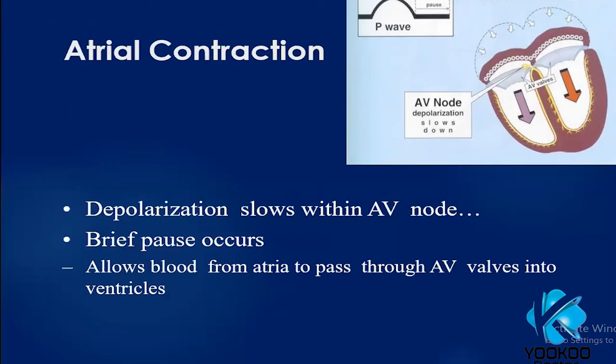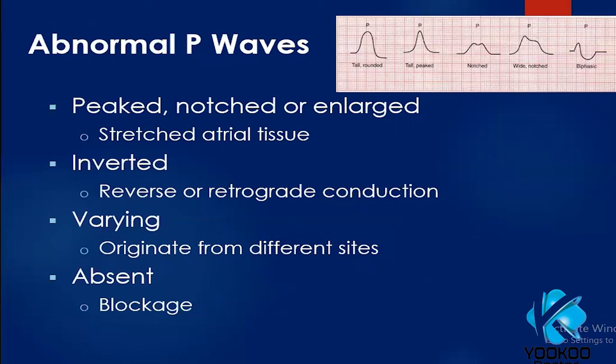Abnormal P waves can be peaked, notched, or enlarged, indicating stretched atrial tissue. They can be inverted, indicating reverse or retrograde conduction in cases where the SA node is not the actual pacemaker. P waves can vary in morphology when they originate from different sites, again indicating the SA node is not in command. P waves can also be absent in cases of blockage.